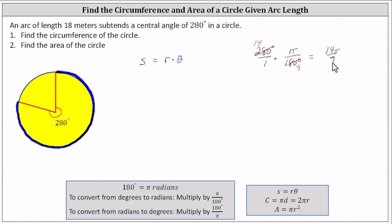Now going back to our arc length formula, because we know the arc length S is 18 and now we know the angle theta in radians, we can determine the radius R. Our equation is 18 equals R times theta, where theta is 14 pi divided by nine.